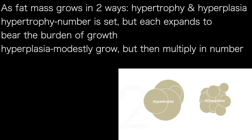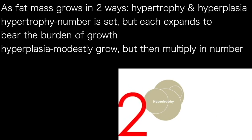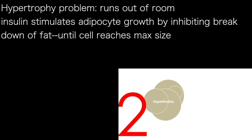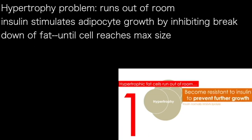There are two problems with hypertrophic fat gain. Both of these are actually quite complicated ideas, but I'm hoping I can convey them in the simplest possible way. The first problem with the hypertrophic fat cell is that it starts to run out of room. It's essentially like a metabolic hotel that has no vacancy. Let's leave that analogy behind for just a moment and come right back to the fat cell.